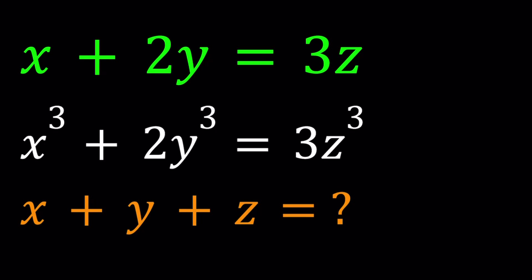Hello everyone. In this video, we're going to be solving a nice system, a cubic system. So we're given these two equations: x plus 2y is equal to 3z, and x cubed plus 2y cubed is equal to 3z cubed. x, y, z are distinct real numbers.